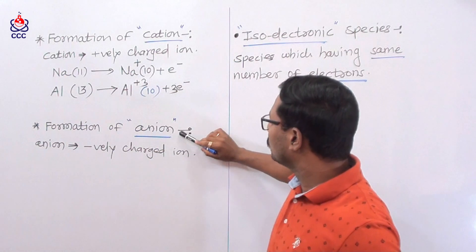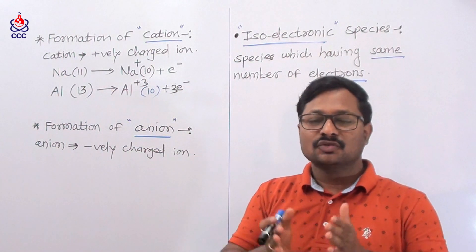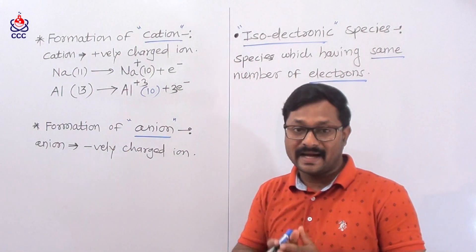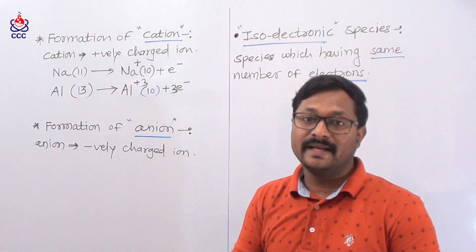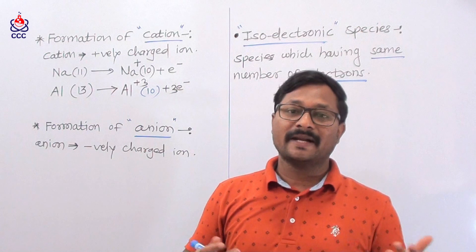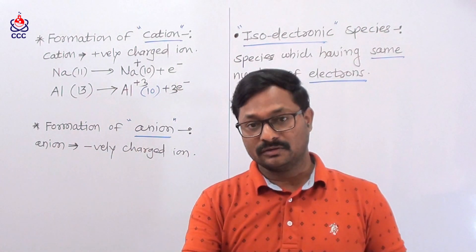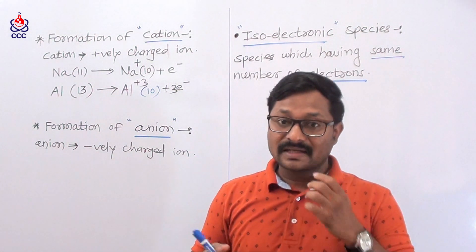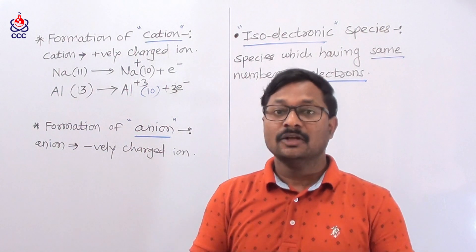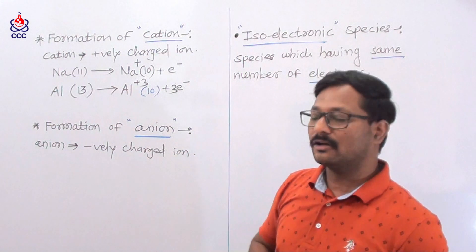The next part is formation of anion. Anion is a negatively charged ion. Cation is formed by losing electrons. In the same way, anion means negative charge — anions are formed by gaining electrons.